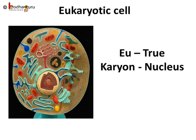Generally, the nucleus is separated from the cytoplasm by a membrane which is called the nuclear membrane. Cells which have an organised nucleus surrounded by a nuclear membrane are called eukaryotic cells. The cells in the human body are eukaryotic cells as the nucleus is surrounded by the nuclear membrane. 'Eu' means true and 'karyon' means nucleus, so eukaryotic cells have a true nucleus.